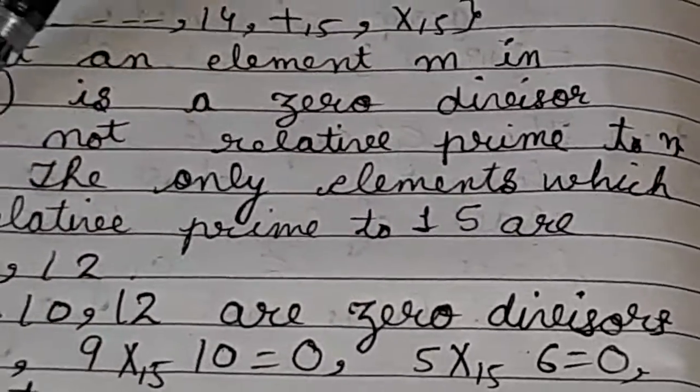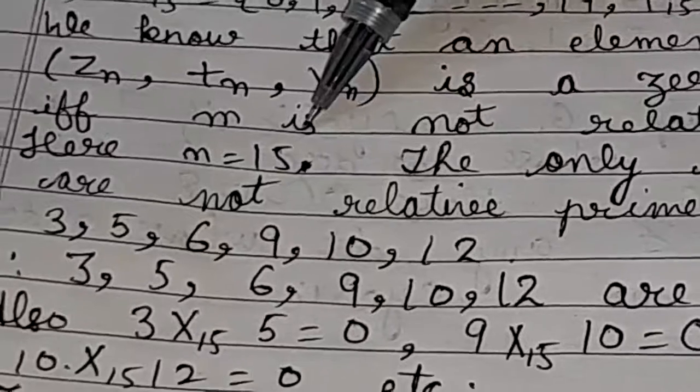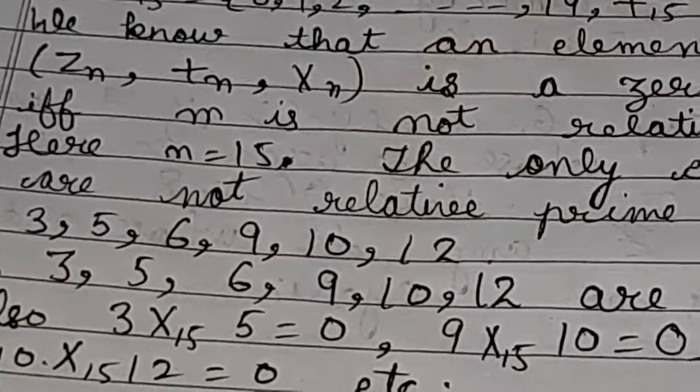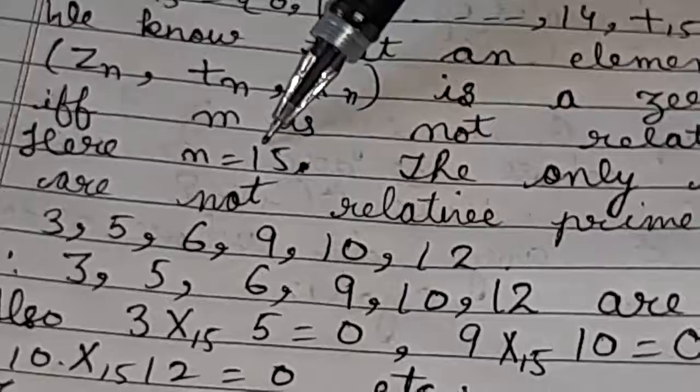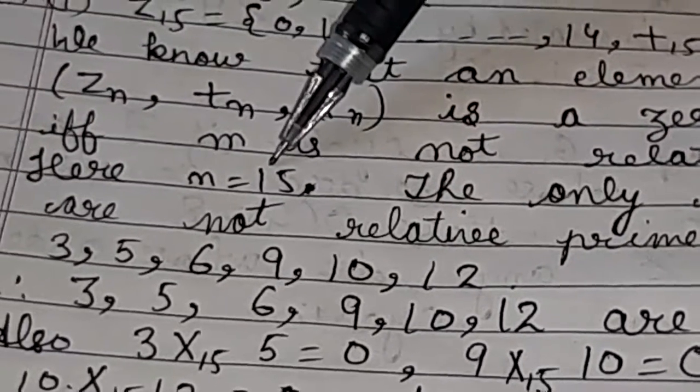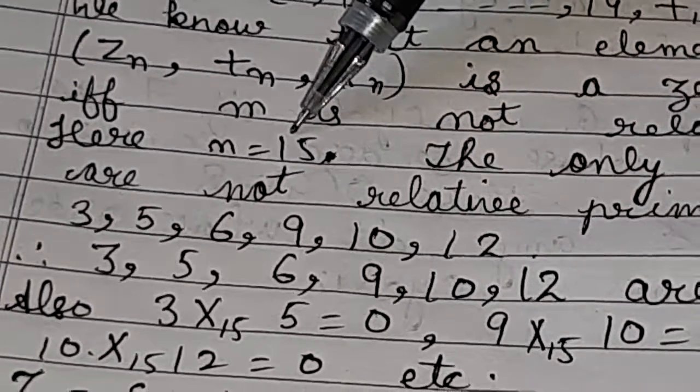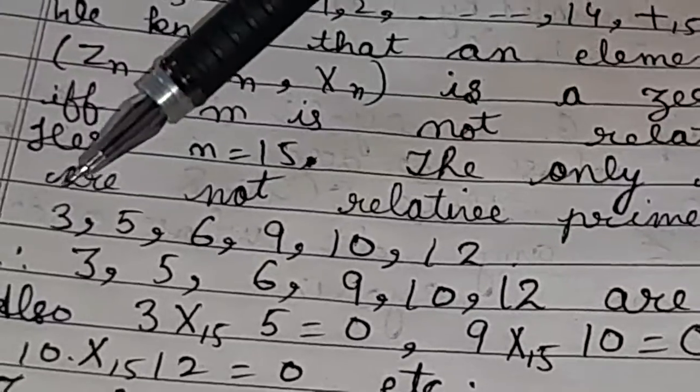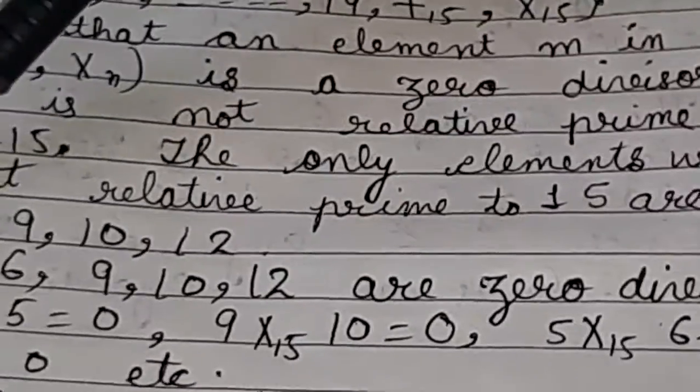Means which have an element common other than 1 also. If we take 3, 3 is not relatively prime to 15 as 3 is common from 3 to 15. Next is 5.